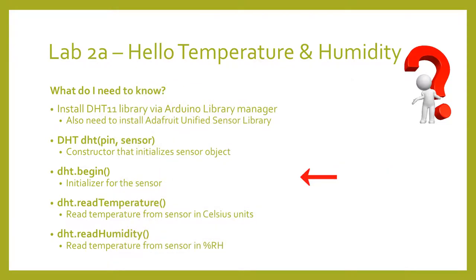Once we've created our object, we'll need to initialize it by calling DHT.begin in the setup function. Just as with Serial.begin, DHT.begin will initialize any variables and structures needed by the library. Once the DHT sensor has been initialized, we'll be able to read out the temperature and humidity by calling the read methods of our object. For temperature, we call DHT.readTemperature, which returns the temperature as a float in degrees Celsius. For humidity, we call DHT.readHumidity, which returns a floating point value with units of percent relative humidity.